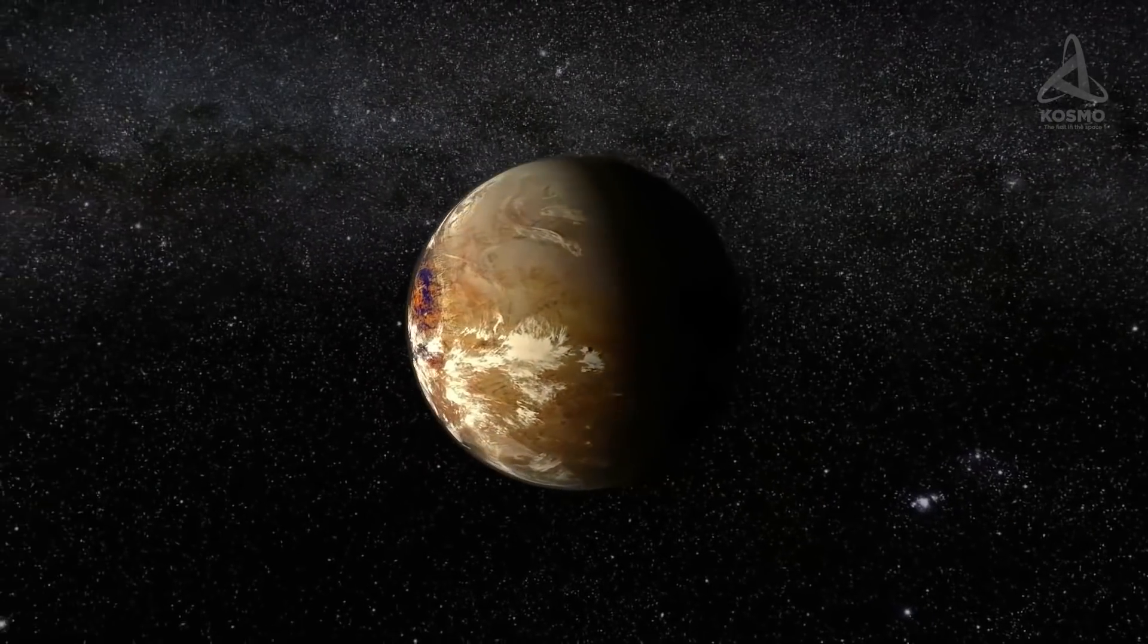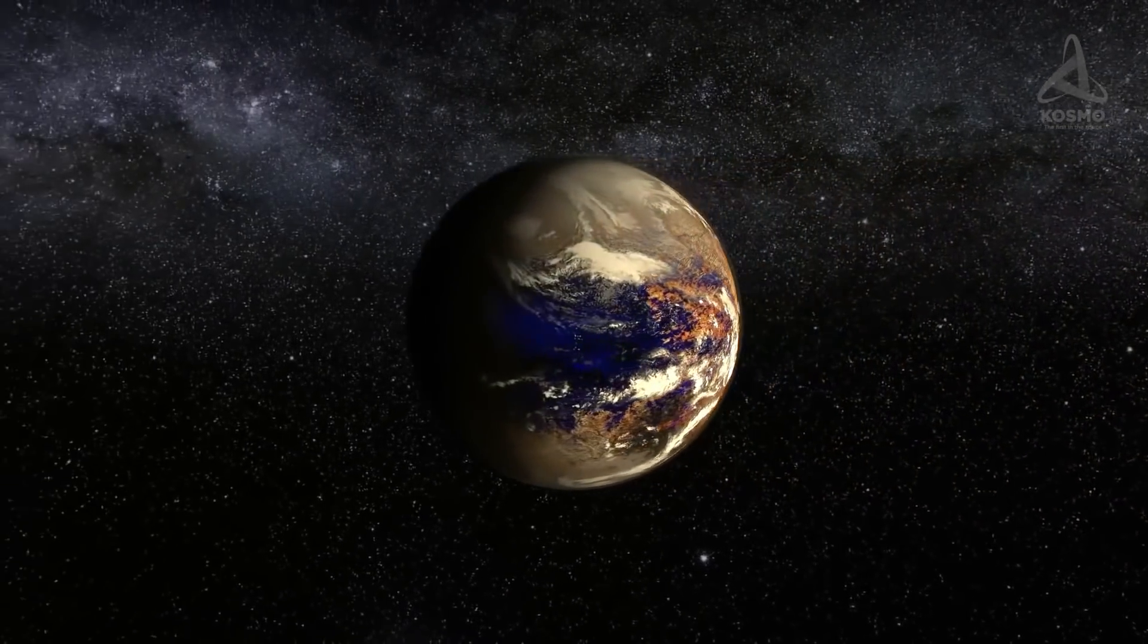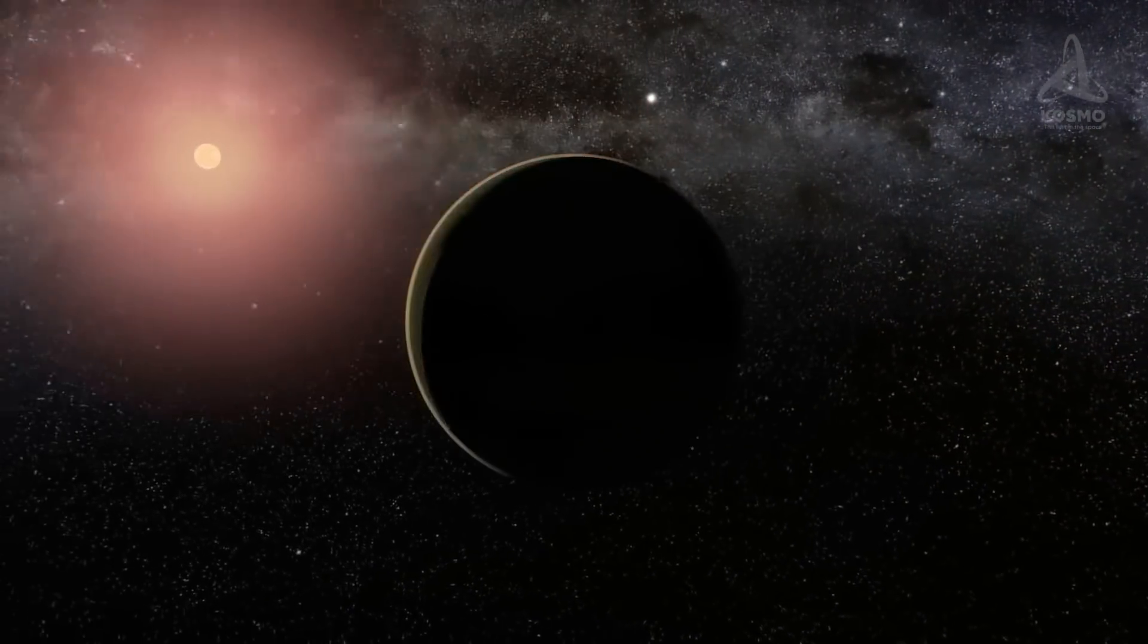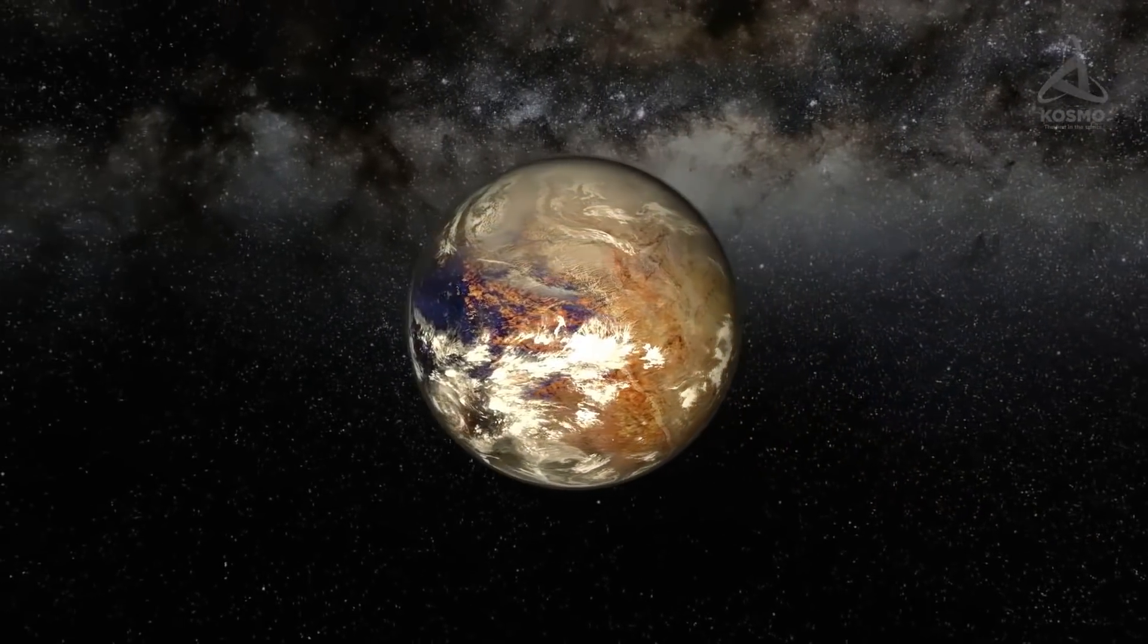Proxima B is 7.5 million kilometers away from its star and it is likely that it's blocked. That is, it faces the star by one and the same side, just like the Moon, which shows the Earth only one of its parts.